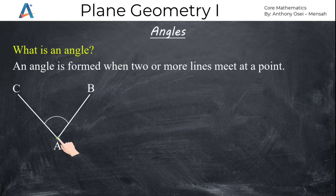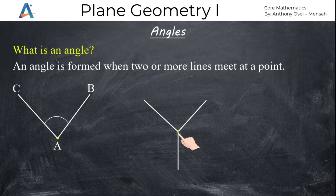These are two lines meeting. We can also talk about different lines — say, I have this line, this line, and another line going this way. You see, these three lines are meeting at this point. So I have an angle forming here, an angle formed here, and another angle formed here. So we have agreed that an angle is formed when two or more lines meet at a point.